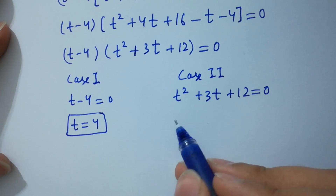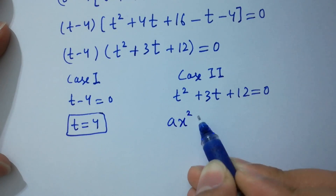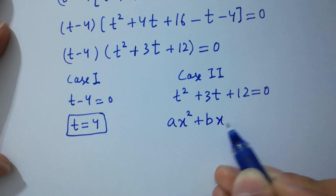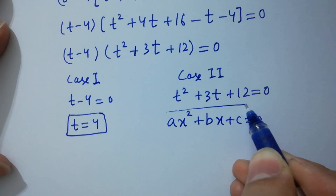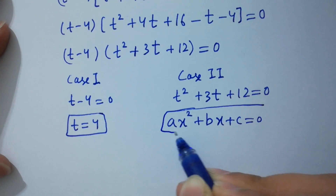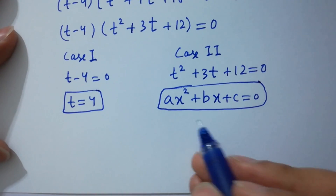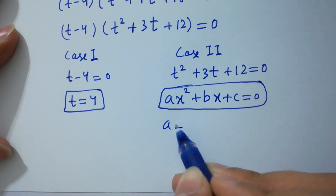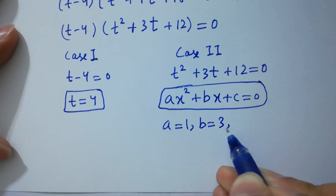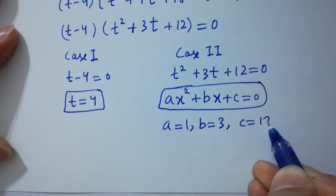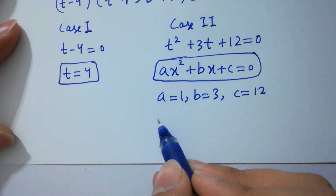For the quadratic equation ax square plus bx plus c equals 0, by comparing we get a equals 1, b equals 3, c equals 12. Apply the quadratic formula: t equals minus b plus or minus square root of b square minus 4ac, all over 2a.